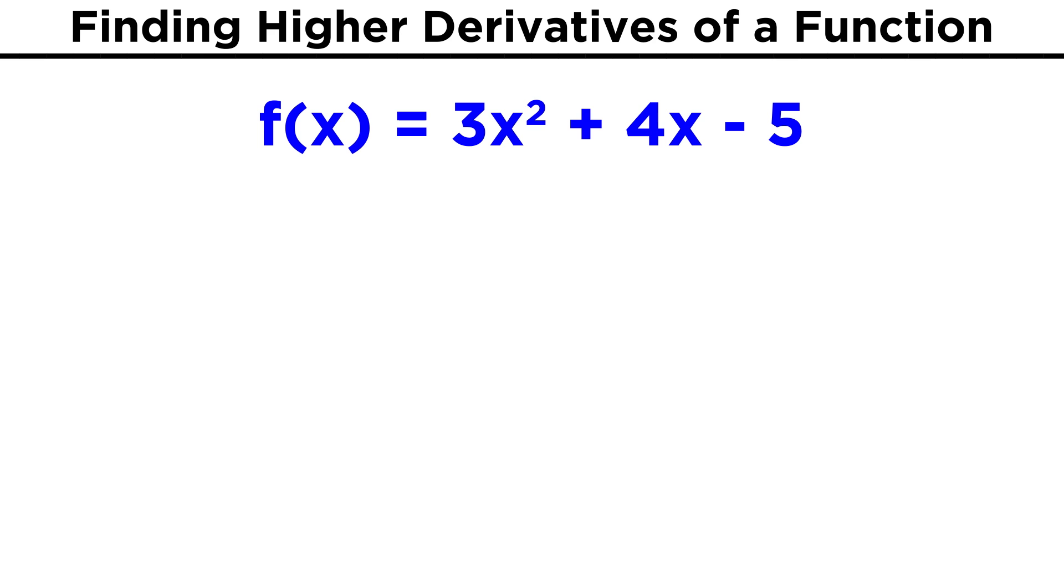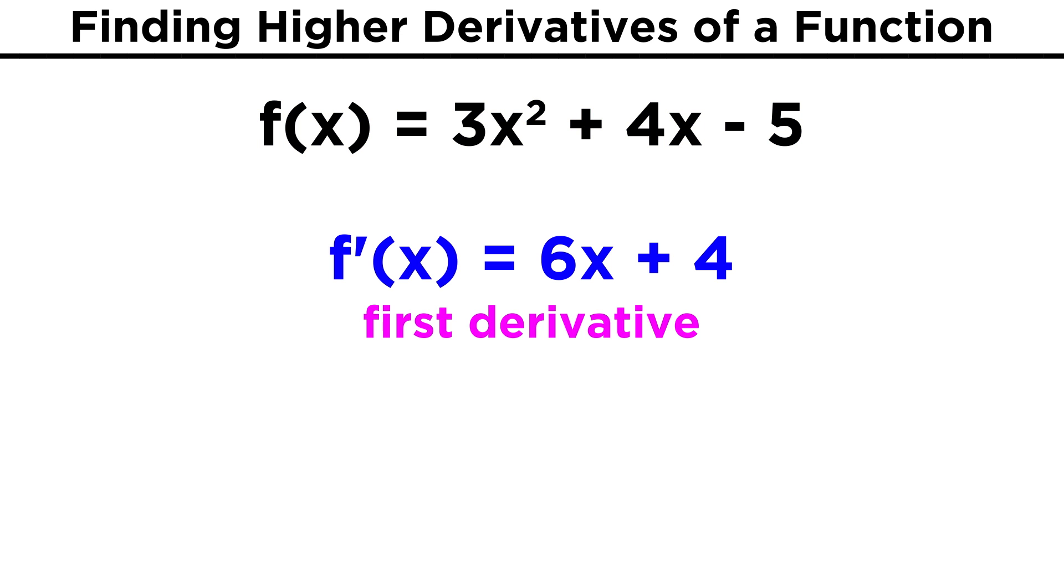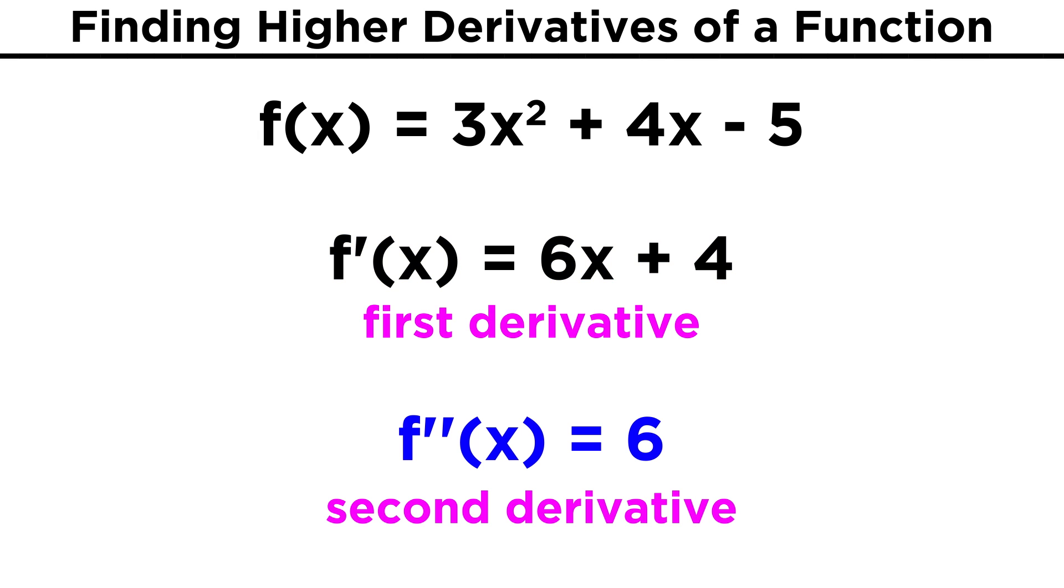For simple polynomials, finding the second derivative is not hard to do at all. Take 3x squared plus 4x minus 5. Taking the derivative of this by using the power rule, we get 6x plus 4 as the first derivative, and then we just take the derivative of this to get 6 as the second derivative. All we did was take the derivative twice.